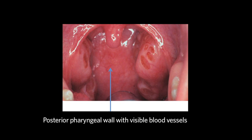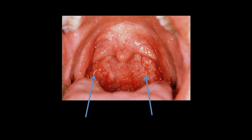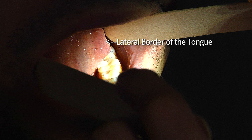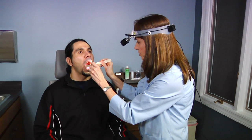The posterior pharyngeal wall is smooth but may contain some visible blood vessels or small islands of lymphoid tissue — this is called cobblestoning, a normal variant. The tongue is pink but has many papillae on its dorsal surface, which may become stained from foods or nicotine. The lateral border of the tongue is smooth and pink.